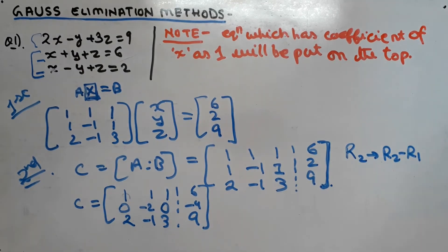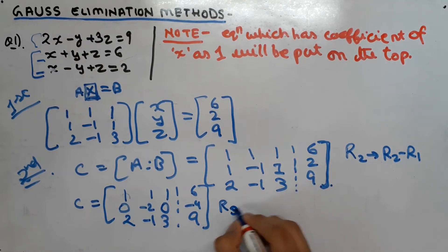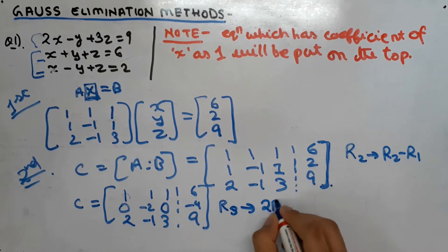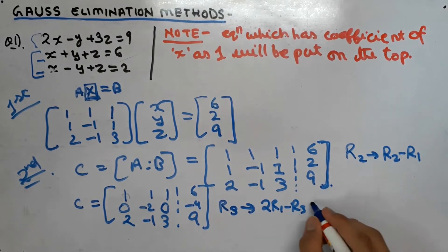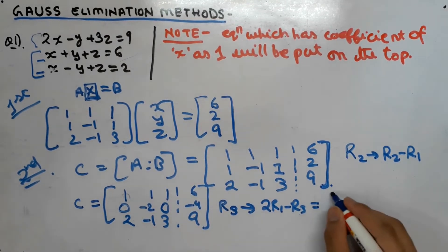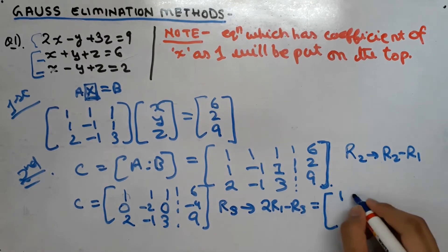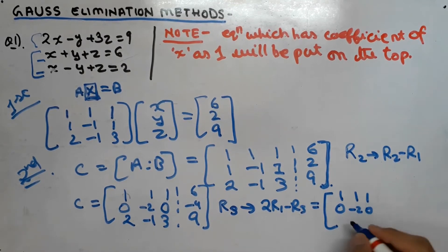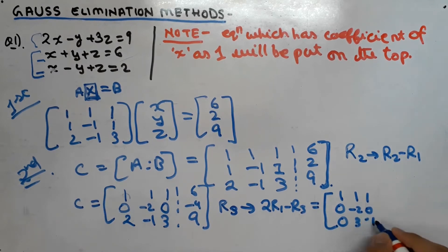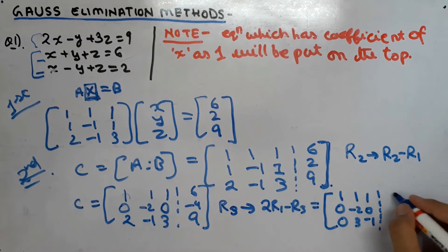Now we use another row transformation: R3 → 2R1 - R3. Our matrix becomes: row 1: 1, 1, 1; row 2: 0, -2, 0; row 3: 0, 3, -1, with the B column becoming 6, -4, 3.